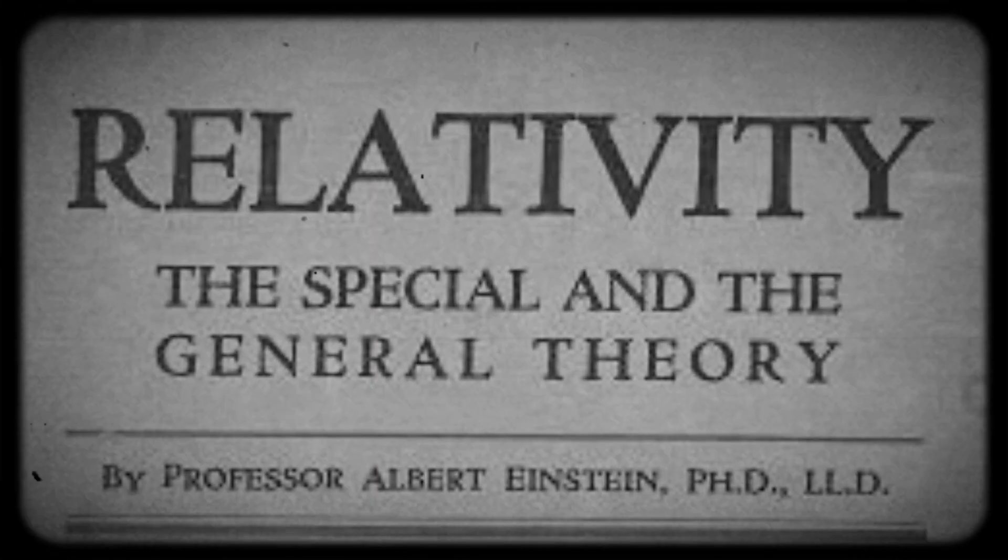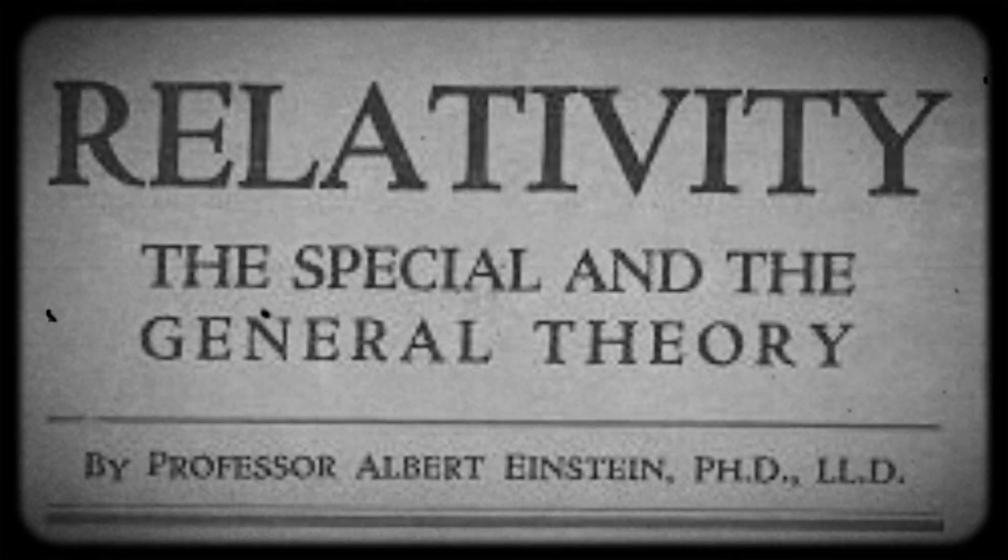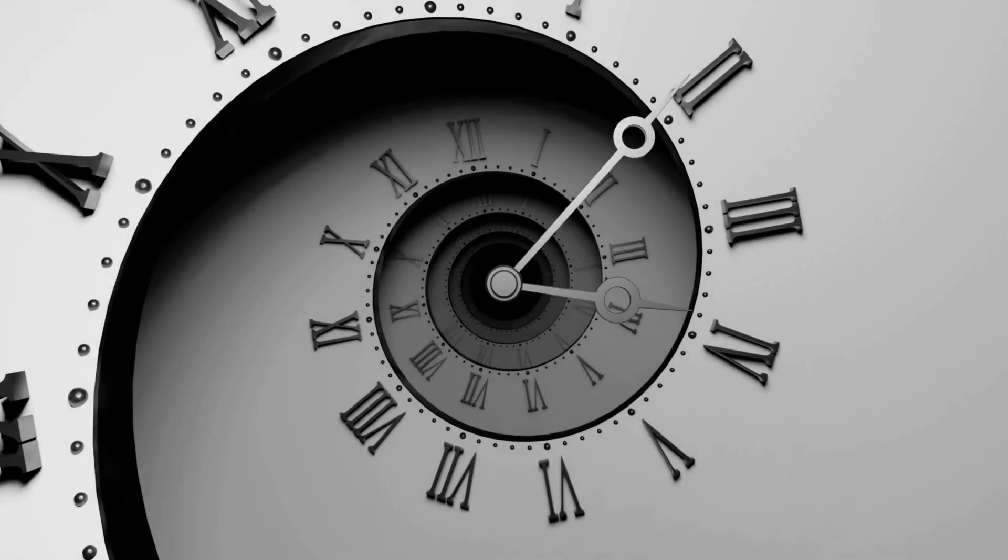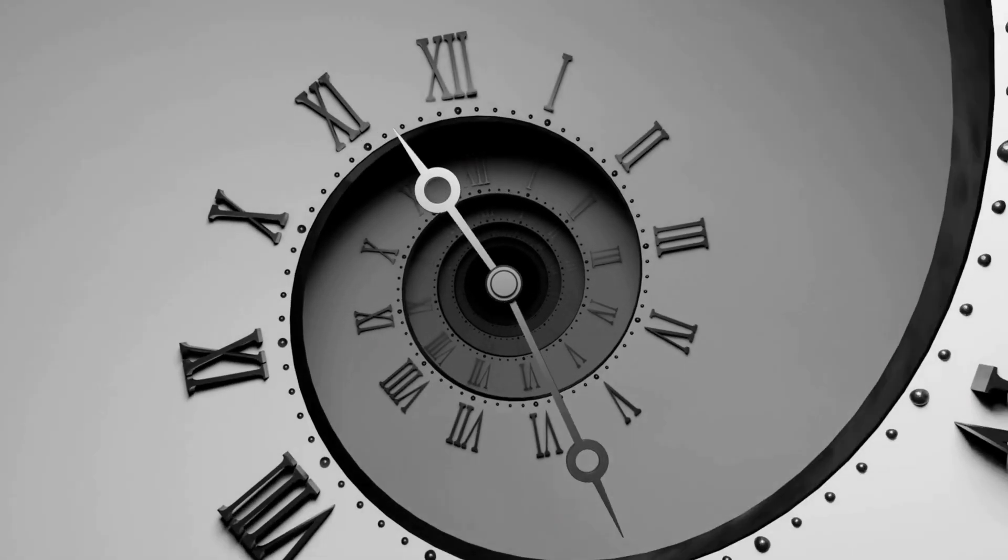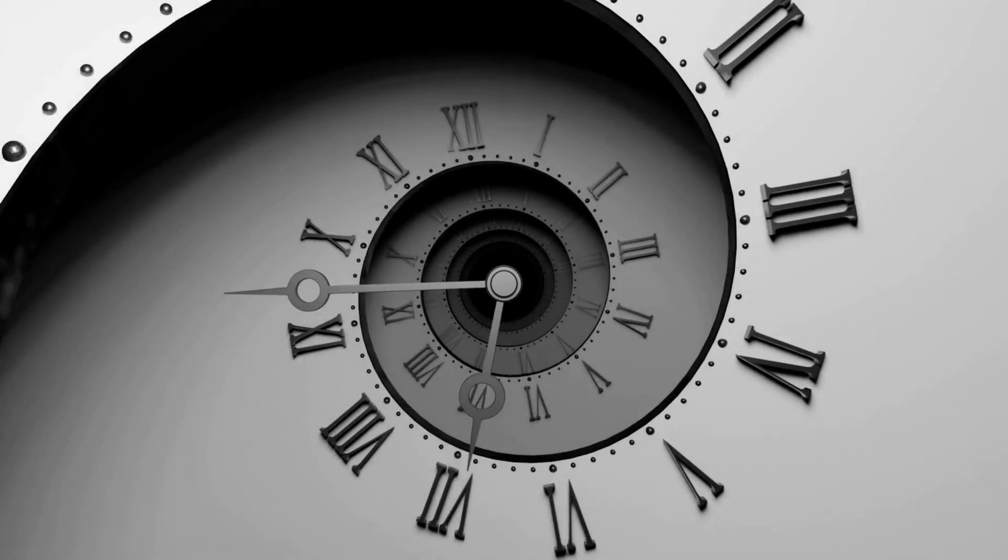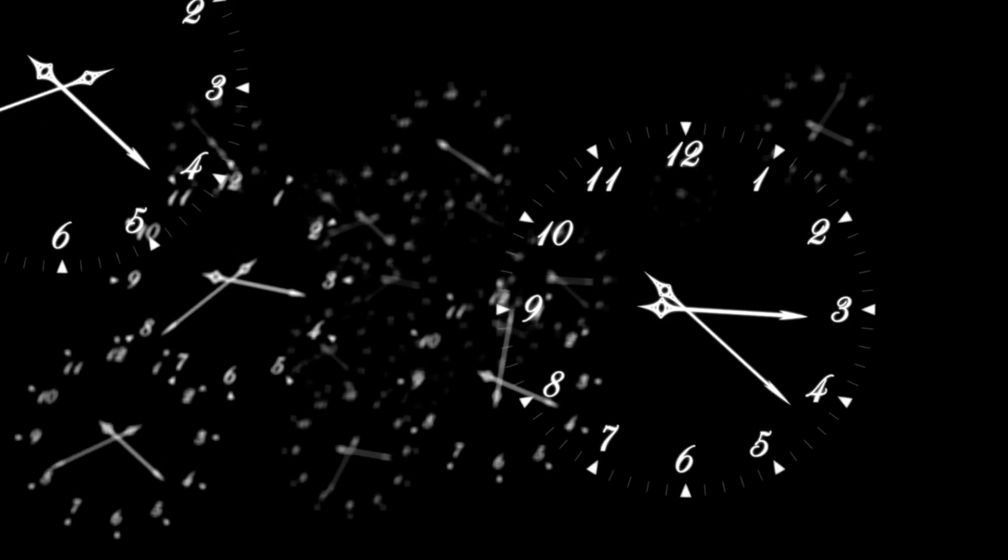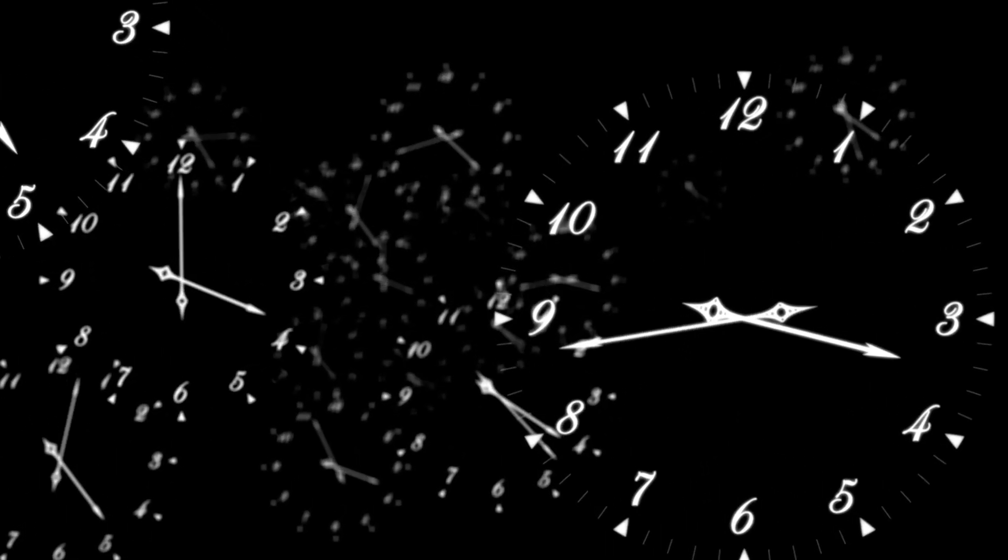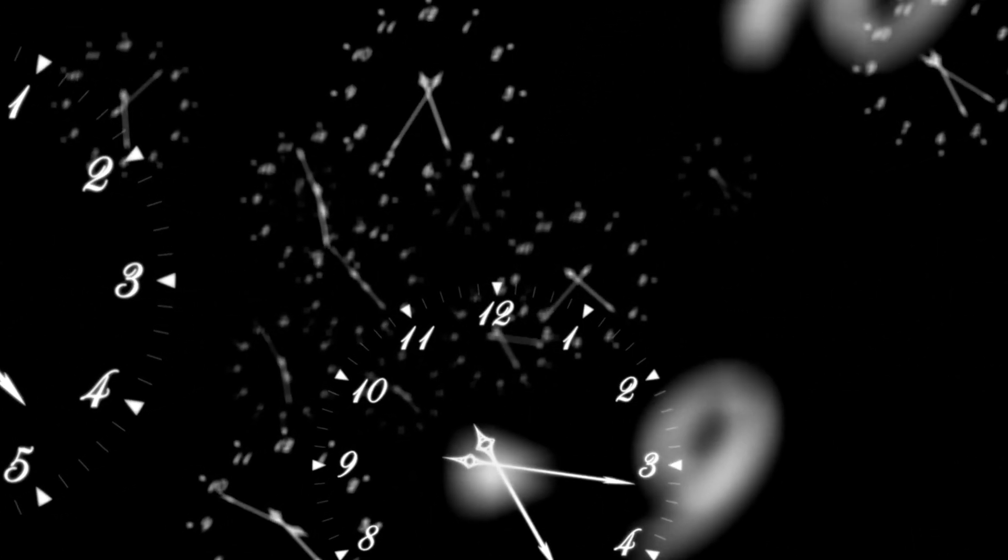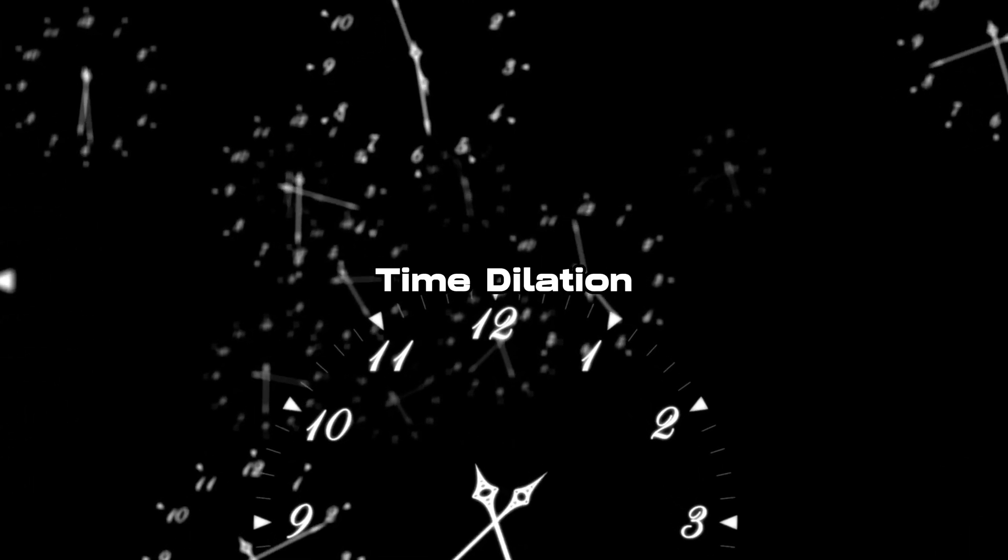According to Einstein's theory of general relativity, time passes more slowly in stronger gravitational fields. This means that as you get closer to the black hole, time would appear to pass more slowly for you compared to an observer farther away from the black hole. This effect is known as time dilation.